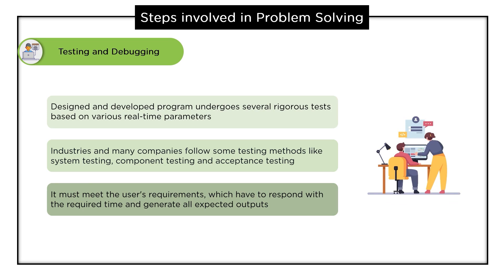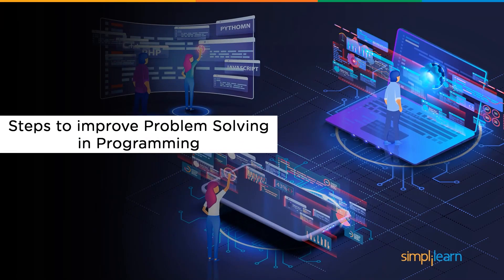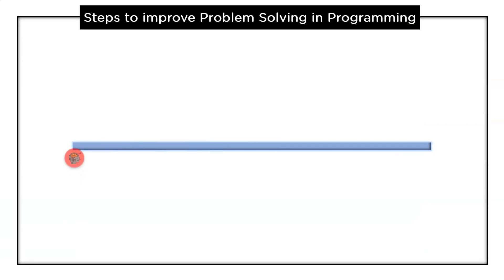These are the four steps involved in problem solving and programming. Now let's have a look at the steps to improve problem solving in programming. Following are the steps to improve problem solving and programming.